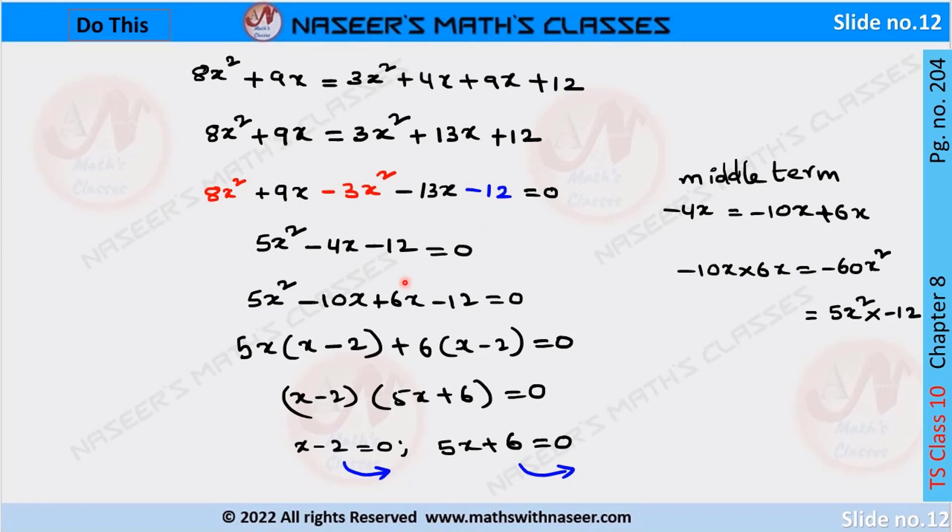This is a quadratic equation. We have to find the factors by writing the middle term as minus 4X equals minus 10X plus 6X. If you multiply these two, we get the product of the X squared term and the constant term.